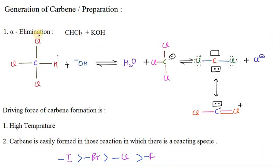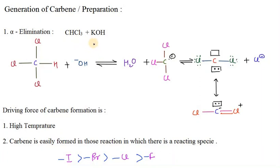In this video we are going to learn about the generation or preparation of carbene — how carbene is prepared. We have seen it exists in two types: singlet carbene and triplet carbene. The first method to prepare carbene is alpha elimination. When elimination occurs from the alpha carbon, it is called alpha elimination. The reagent used is a base at high temperature, specifically CHCl3 in the presence of KOH.